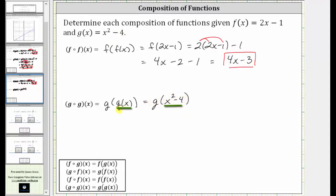And now x squared minus 4 becomes the input into our function g of x. And since g of x is equal to x squared minus 4, we substitute x squared minus 4 for x, which gives us the square of the quantity x squared minus 4, and then minus 4. Now we need to multiply this out and combine like terms.